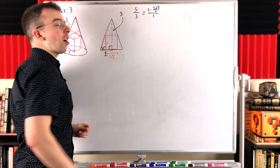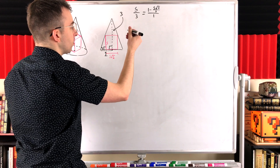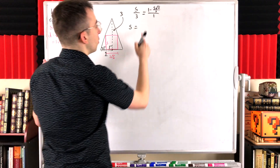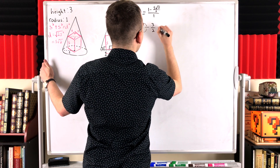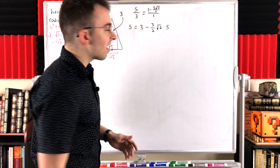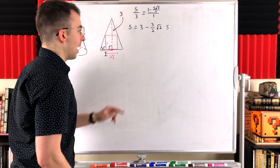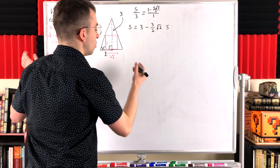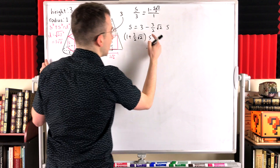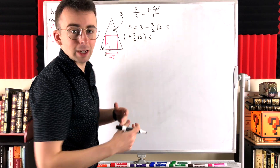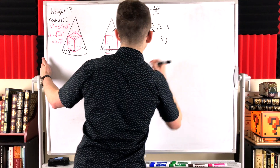Now all we've got to do is solve this equation for s. We can begin by multiplying both sides of this equation by 3. That leaves us with s equals 3 minus 3 times s√2 over 2, which is 3 minus (3/2)√2 · s. Now let's add (3/2)√2 · s to both sides so that we can get all the s terms on the left side of the equation. That gives us 1 plus (3/2)√2 times s equals 3.